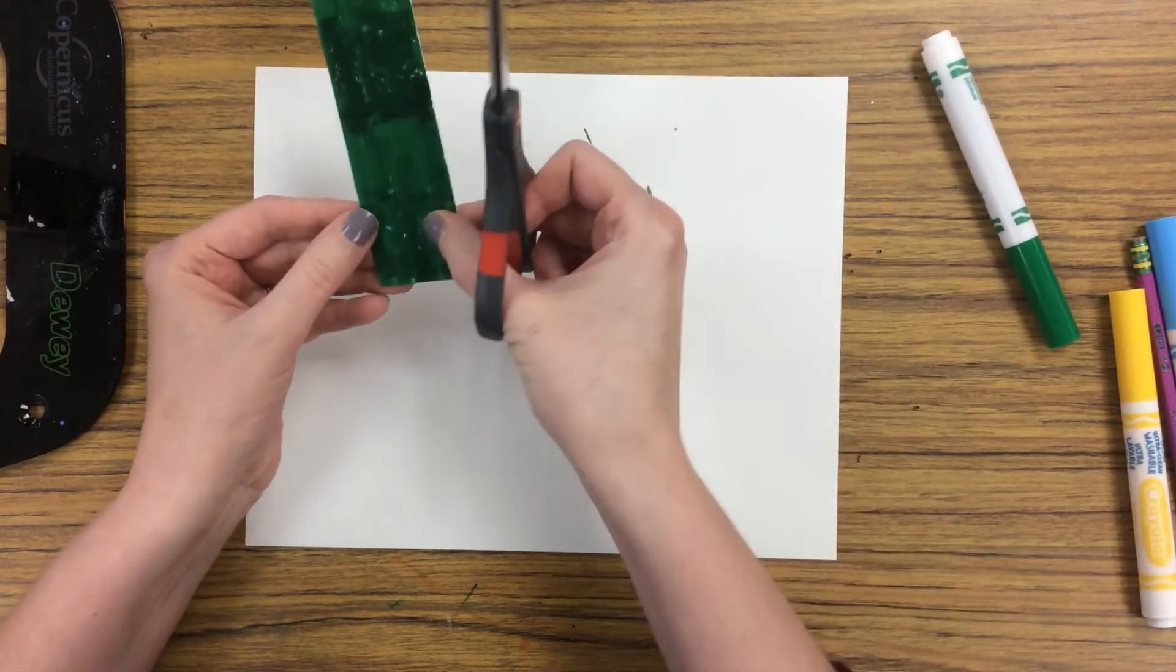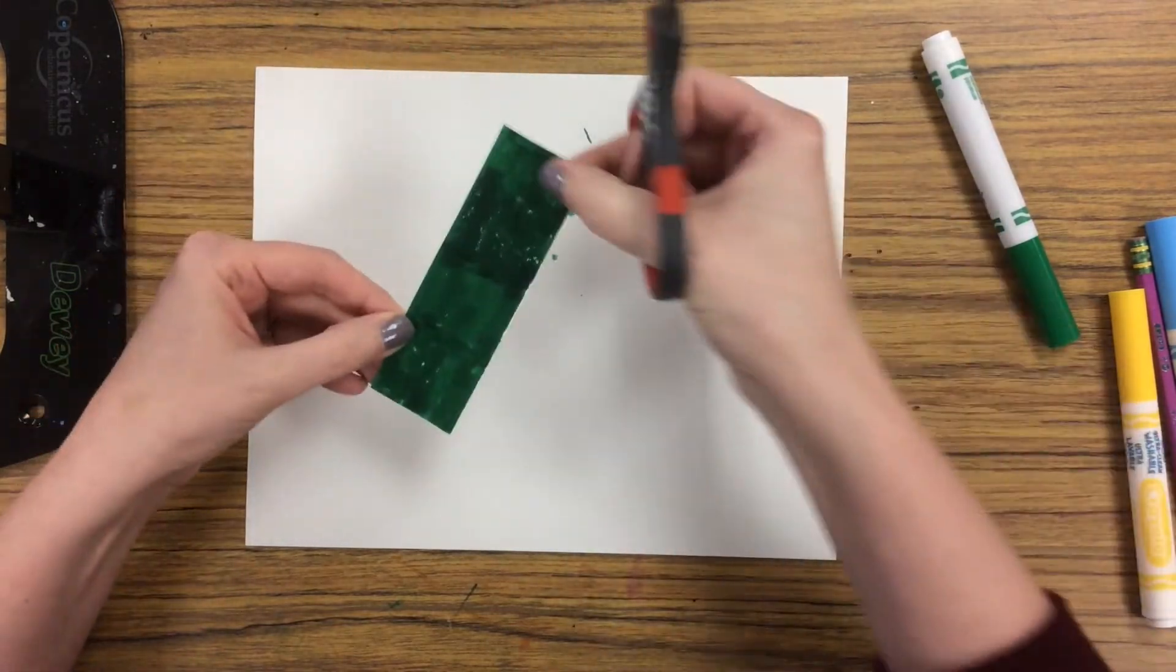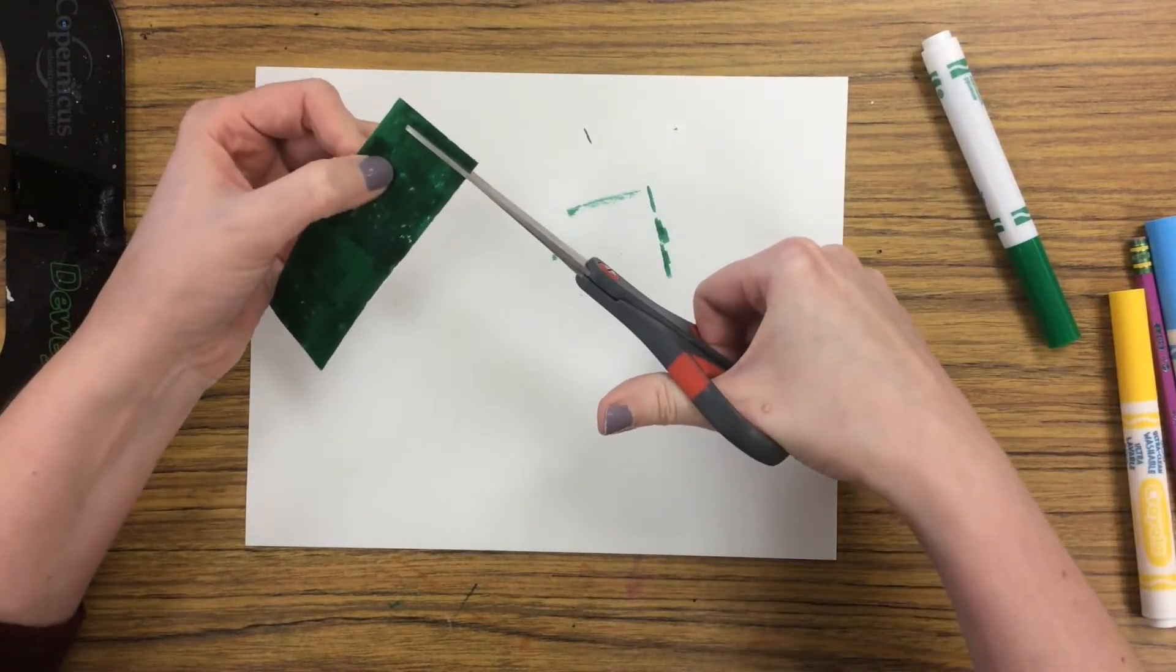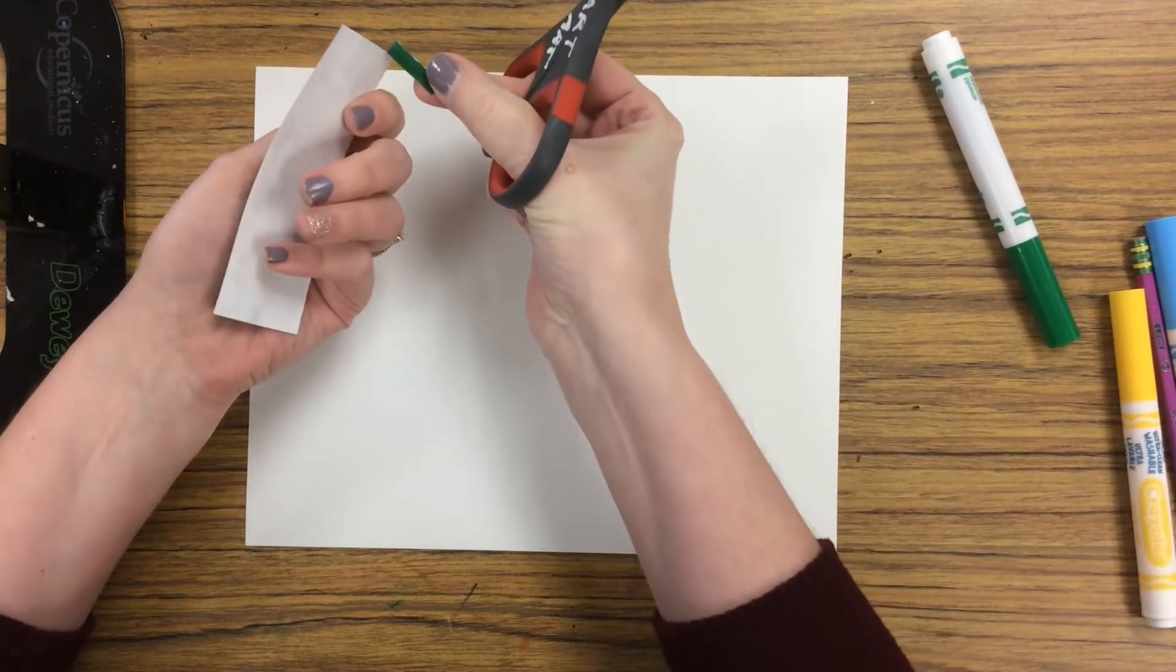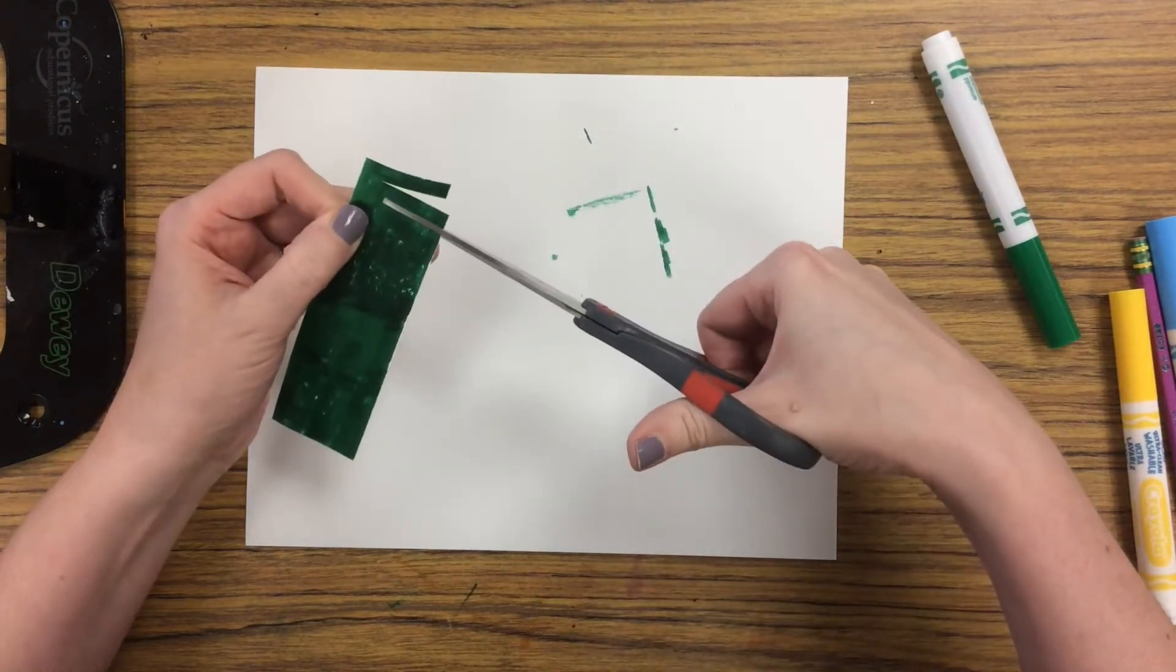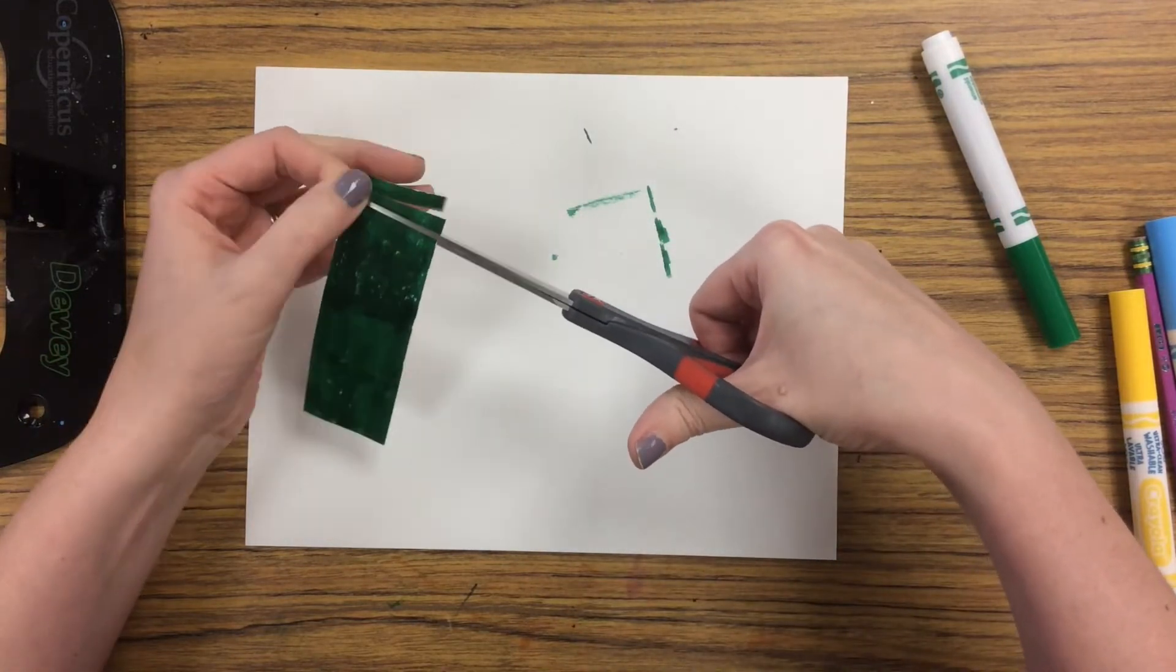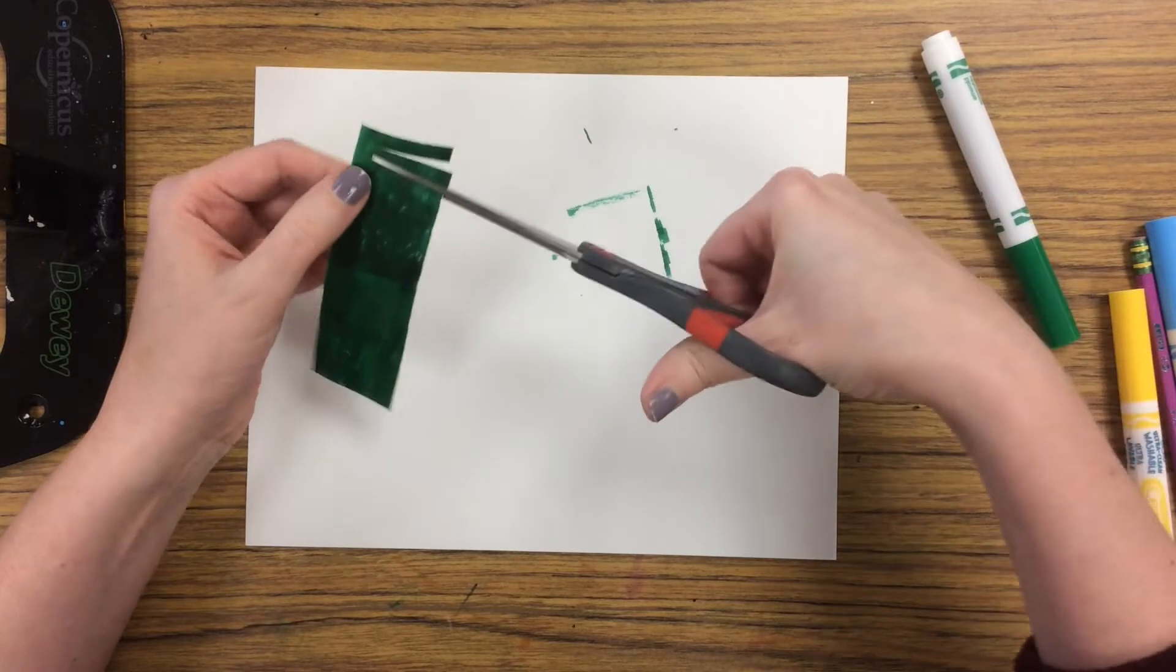Then you're going to hold it and carefully start cutting little slits into it, but make sure not to cut all the way because then you're gonna cut that piece off. We just want to cut all the way, leaving a little bit along this edge.